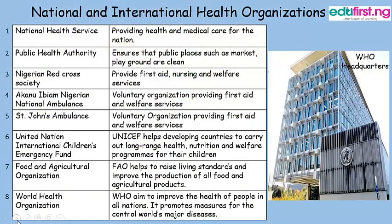There are some national and international health organizations set up to care for the health of people. National health organizations include: the National Health Service, focusing on providing health and medical care for the nation; the Public Health Authority, which ensures that public places such as markets and playgrounds are clean for public use; the Nigerian Red Cross Society, which provides first aid, nursing, and welfare services; and the Akanu EBM Nigerian National Ambulance and St. John's Ambulance — voluntary organizations providing first aid and welfare services.